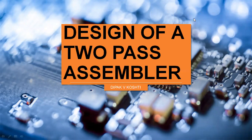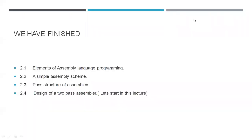Welcome students. This is the next point in chapter two: design of a two-pass assembler. We have already finished with elements of assembly language programming, a simple assembly scheme, and what is meant by pass structure of assemblers, including two-pass translation and single-pass translation. In this lecture and hereafter in chapter two, we will learn the design of a two-pass assembler.